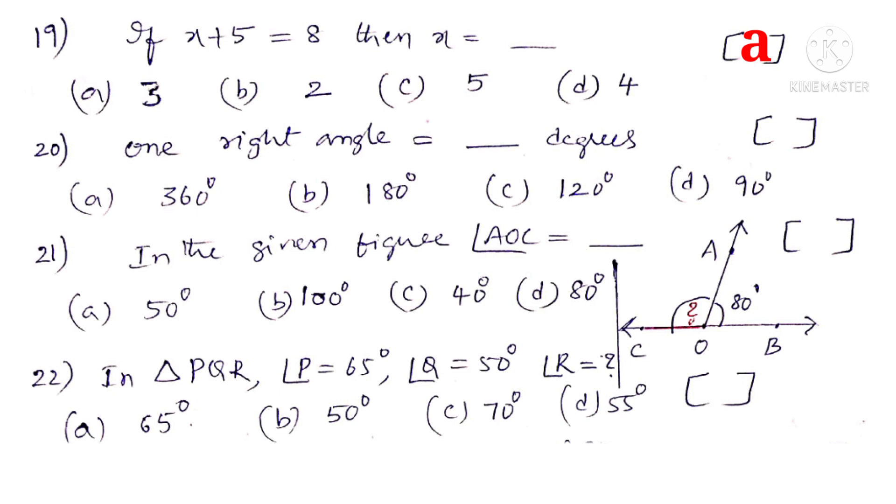20. 1 right angle is equal to dash degrees. 90 degrees. So the correct choice is D.